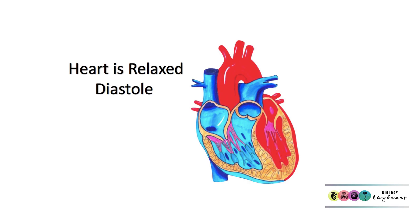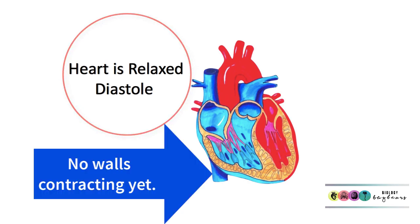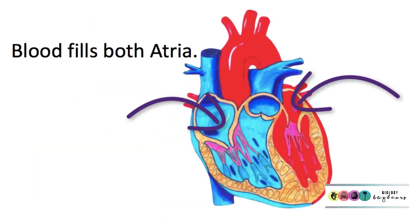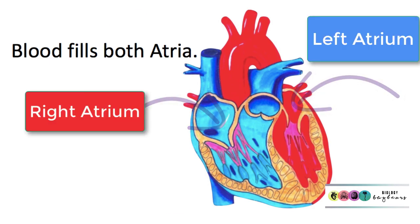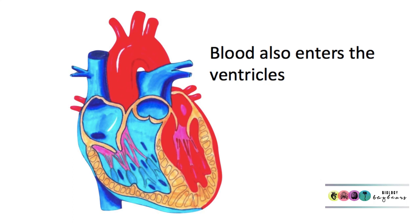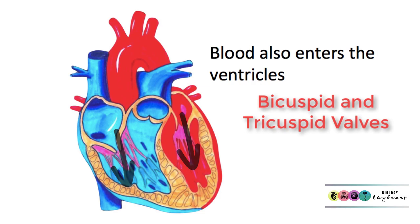So the heart is relaxed — diastole — nothing is contracting, and blood flows into the top two chambers, the atria. Remember the left atrium and the right atrium. Blood will also now flow into the ventricles, the larger two chambers — the left and the right ventricle — through the now-opened bicuspid and tricuspid valves.